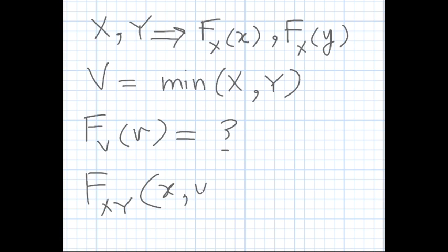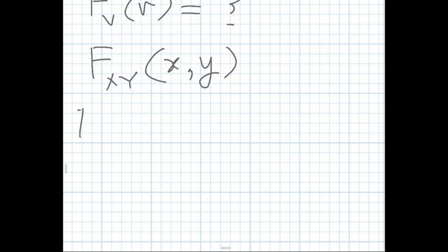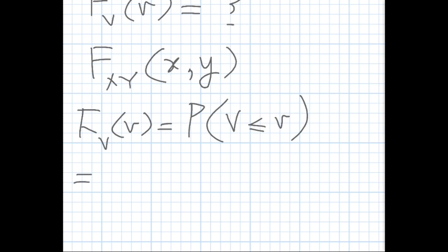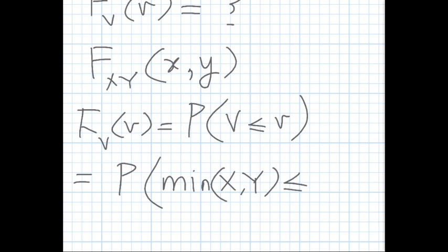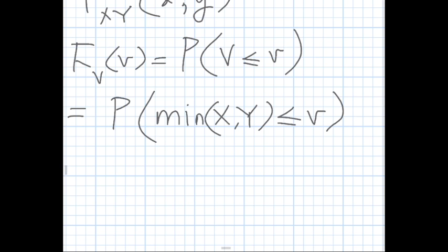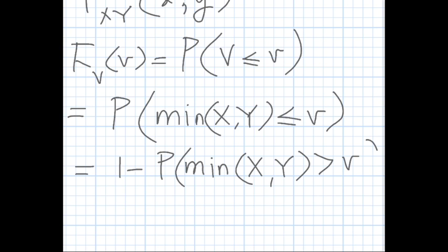We proceed by writing F_V(v) equals probability that V is less than or equal to v, which equals the probability that the minimum of X and Y is less than or equal to v. This equals 1 minus the probability that the minimum of X and Y is greater than v. This is a standard procedure — for minimum of two random variables we use the complement.